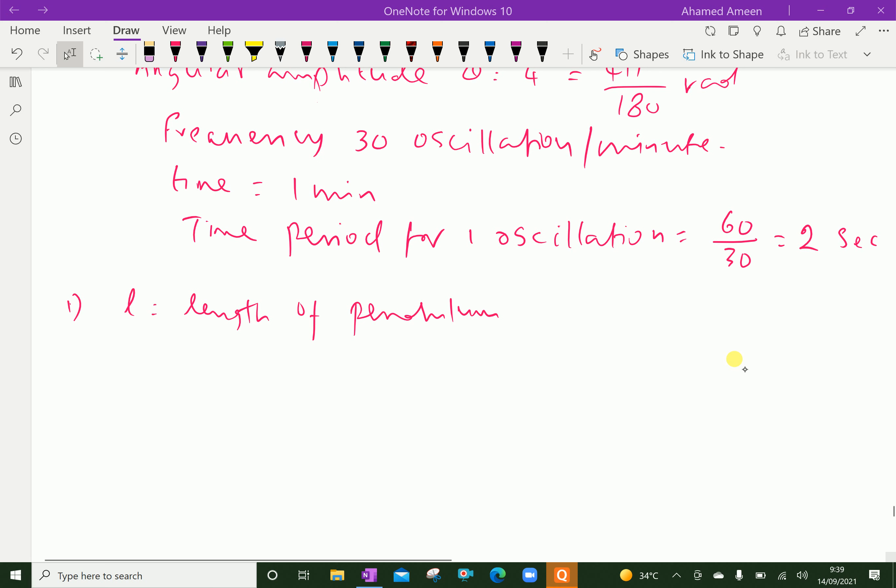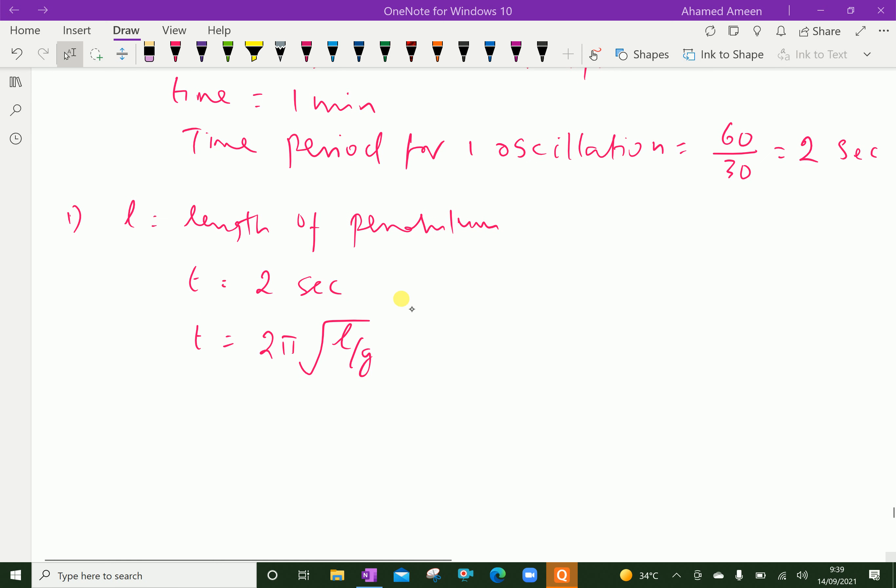We know that T equals 2 seconds. Therefore, time period formula, T equal to 2π root L by g. From that we are using time period formula 2π root L by g.